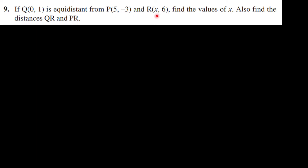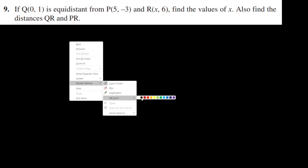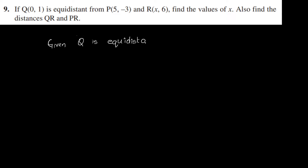If Q(0,1) is equidistant from P(5,-3) and R(x,6), that means Q is equidistant from P and from R. Then find the value of x. Given Q is equidistant from P and R, since Q is equal distance from P and also from R, therefore QP is equal to QR.